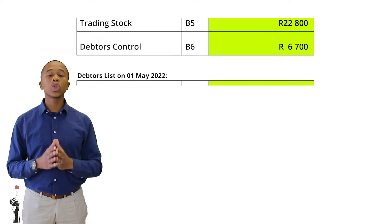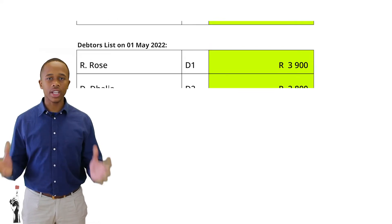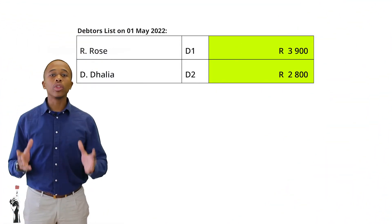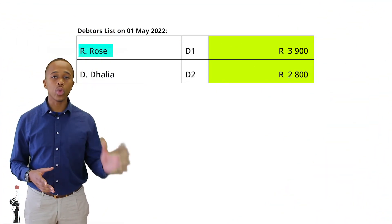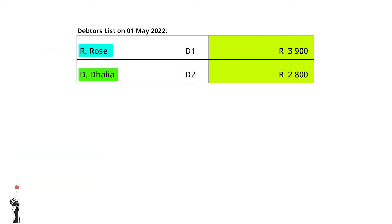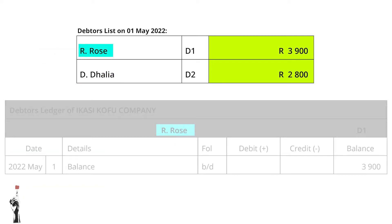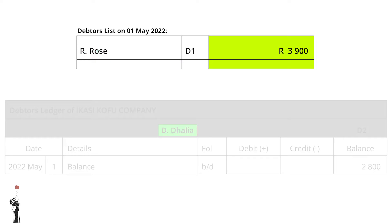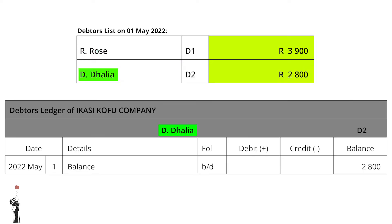Now let's look at the debtors ledger. We'll be dealing with two debtors: R Rose and D Dahlia. First up is the debtor R Rose, and she owes us three thousand nine hundred rand at the beginning of May. The last balance will be D Dahlia, and she owes us two thousand eight hundred rand.